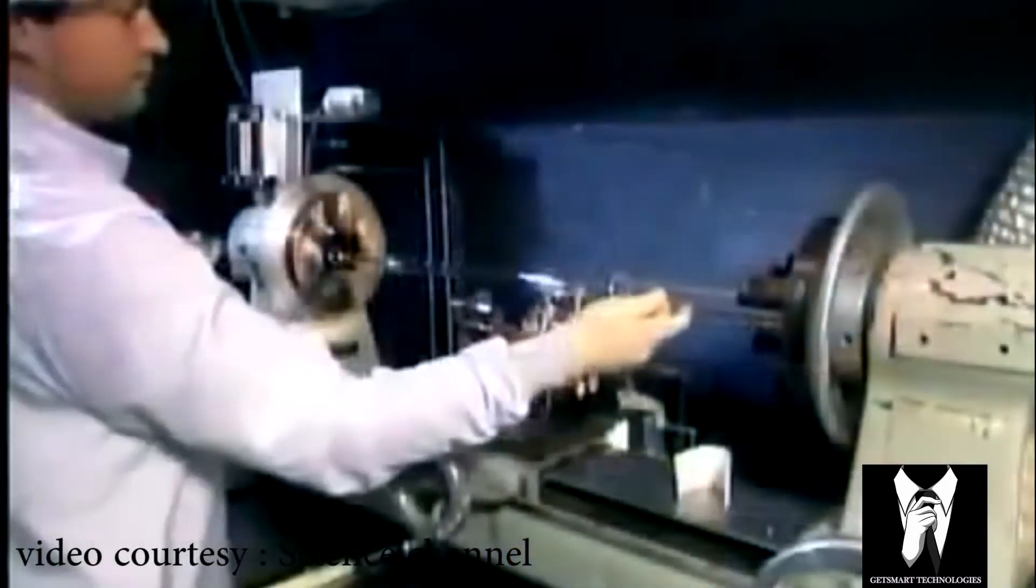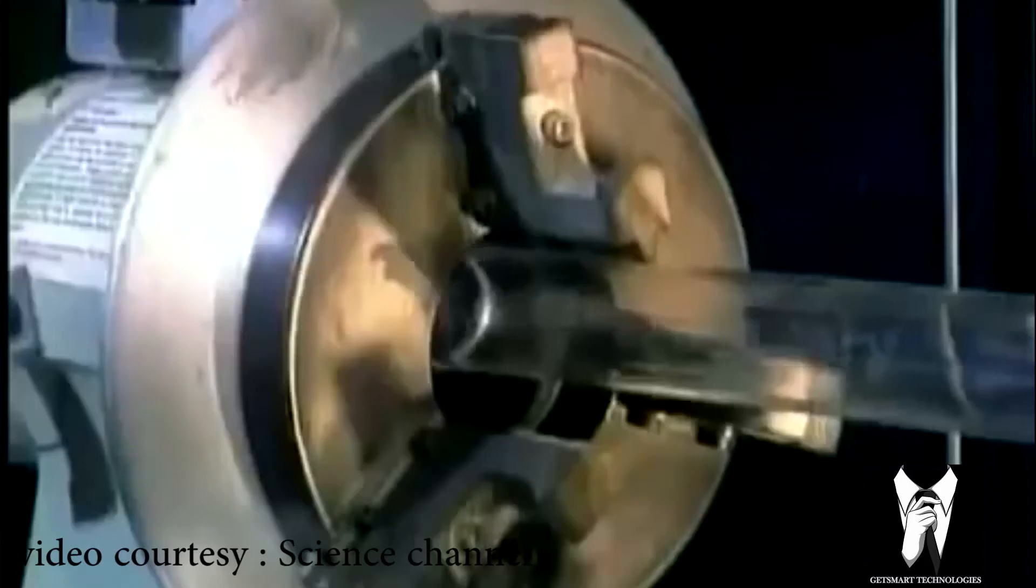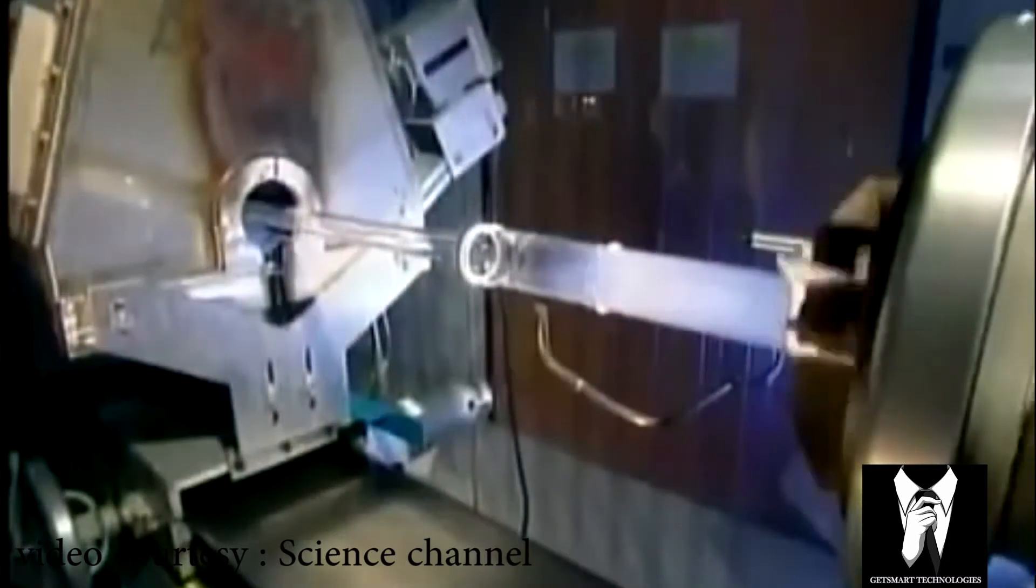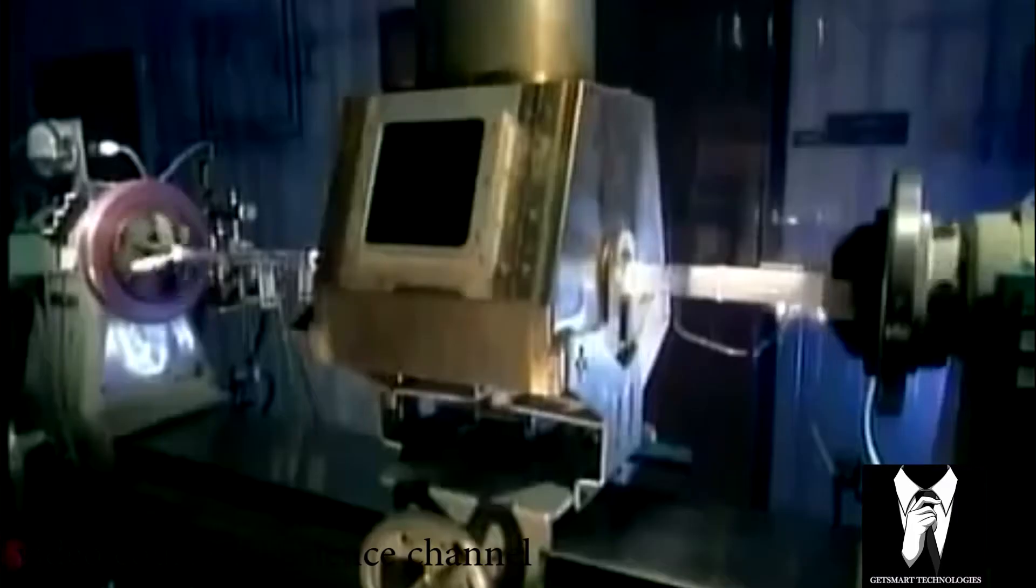They put this new longer tube onto another lathe. As the tube spins, they inject a mixture of chemical gases inside while a traversing burner heats everything up.